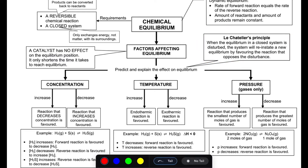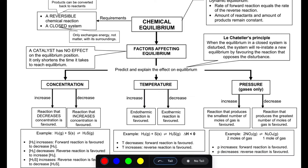There is a principle that governs chemical equilibrium called Le Chatelier's Principle. It states that when a chemical equilibrium in a closed system is disturbed, the system will reinstate a new equilibrium by favoring the reaction that opposes the disturbance. So once there's a disturbance, the system reinstates equilibrium — not the original, but a new equilibrium — by opposing whatever disturbance was made.